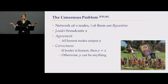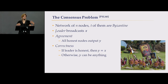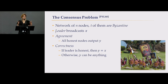To solve that problem, let's formalize it in a more theoretical way. You have a network of N nodes and T of them are adversarial — sometimes called Byzantine, sometimes adversarial — meaning they are not honest. The leader can broadcast some input, then they try to agree on it, and all nodes should output Y. We say agreement if all honest nodes have the same state and output the same thing. We say correctness if the leader is honest — the output should equal the input; otherwise it can be anything.